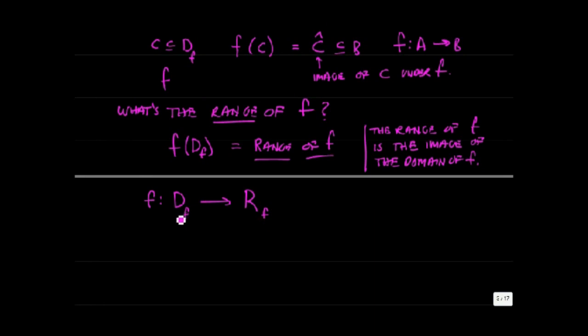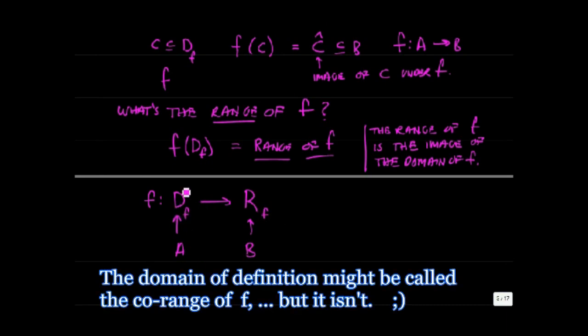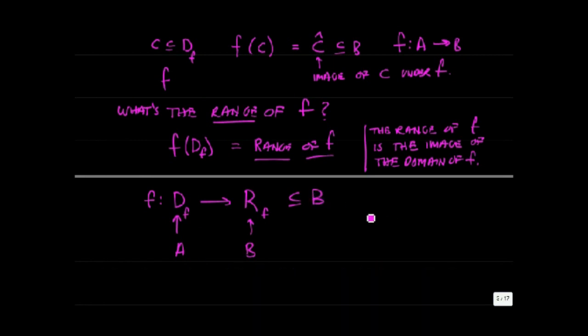So the definition of f specifies subsets of our two original sets A and B. The definition of f specifies a subset of A on which f is defined. And the image of that subset, the image of the domain of f, is equal to the range of f and the range of f contained in this set B.